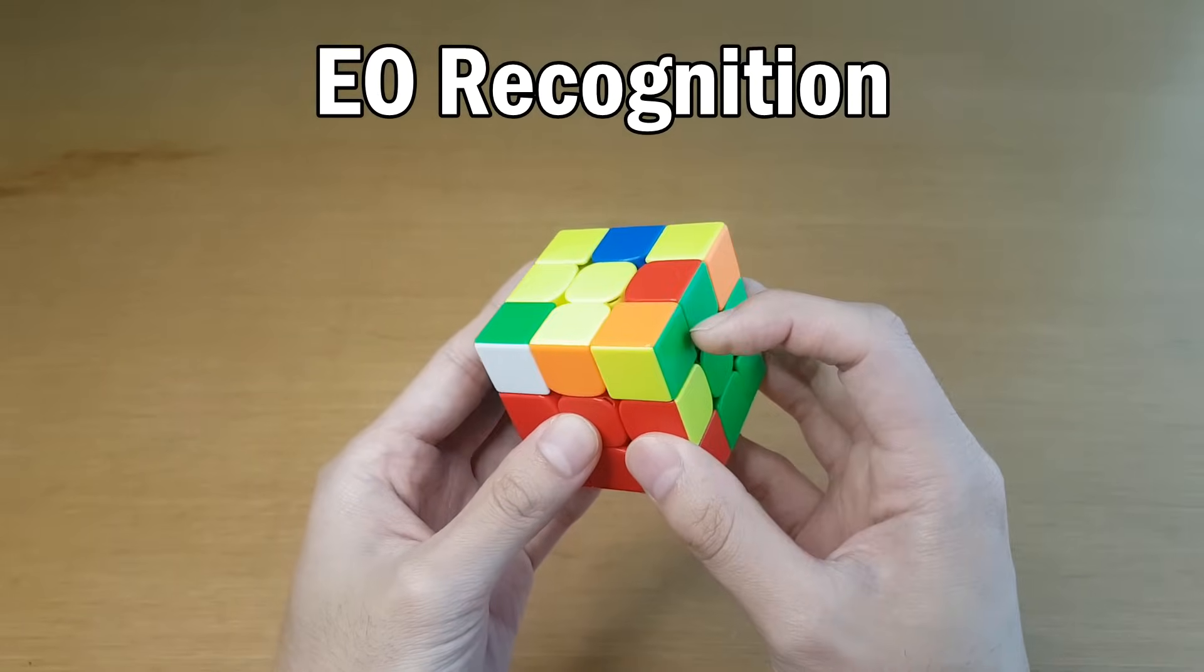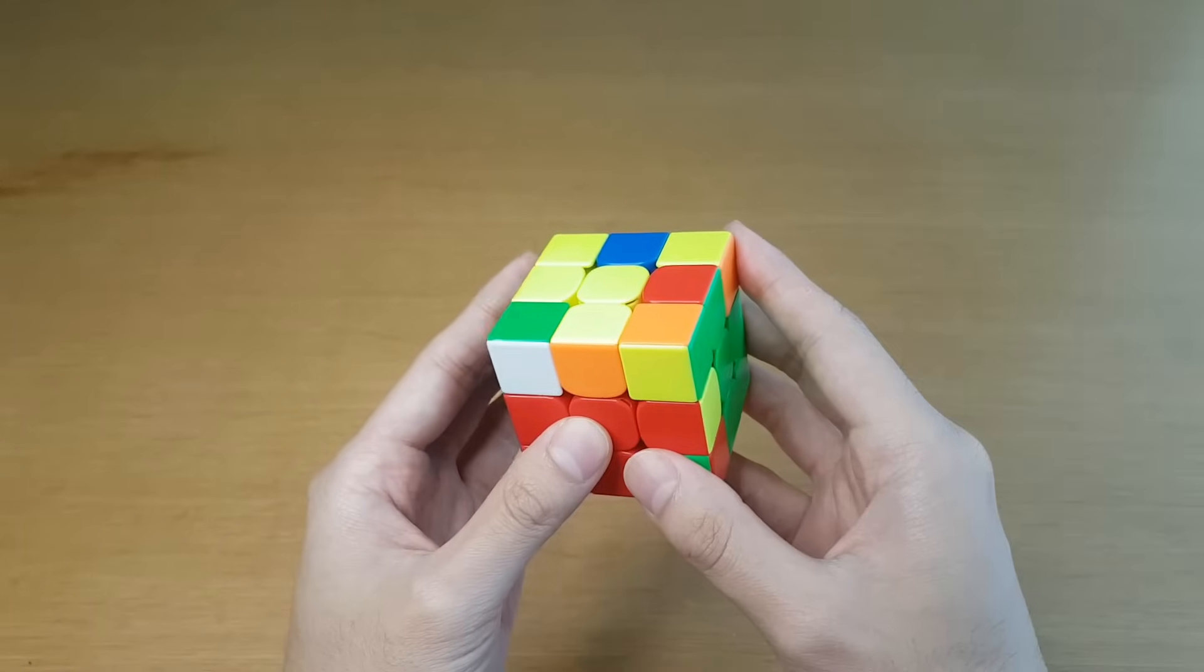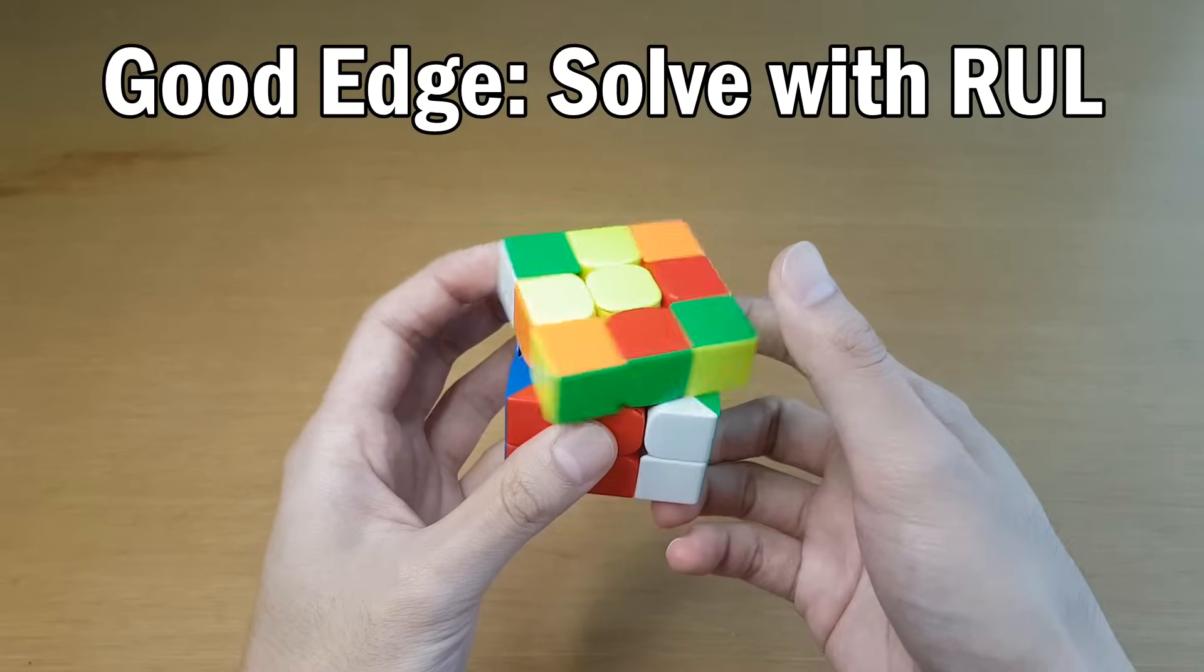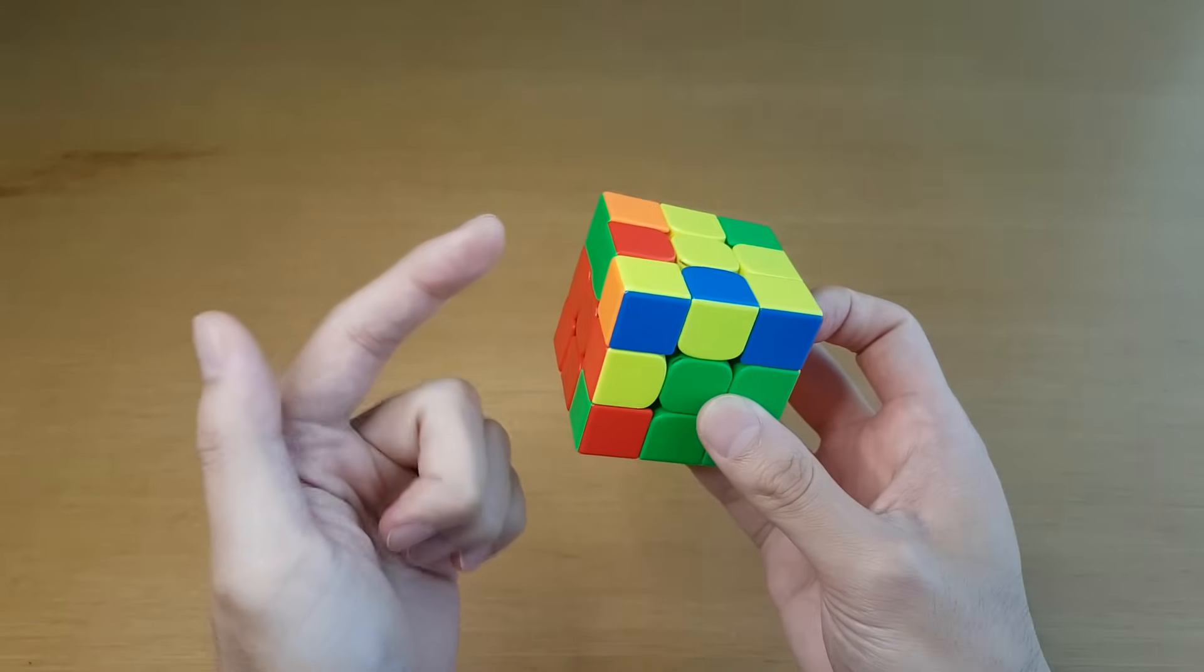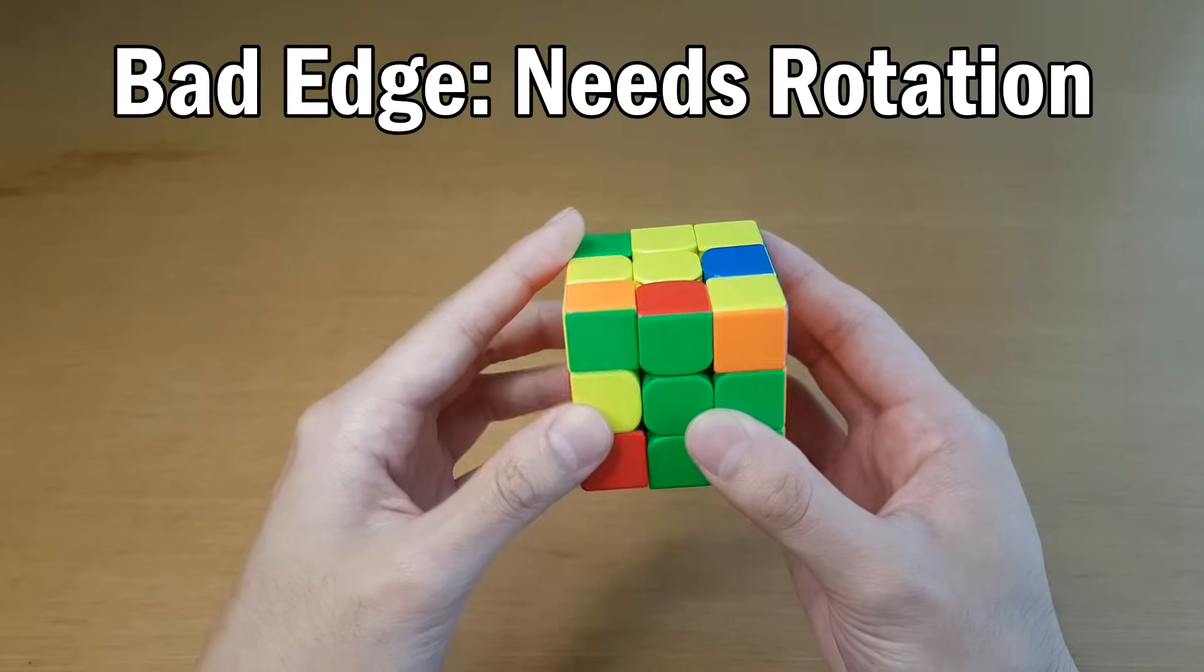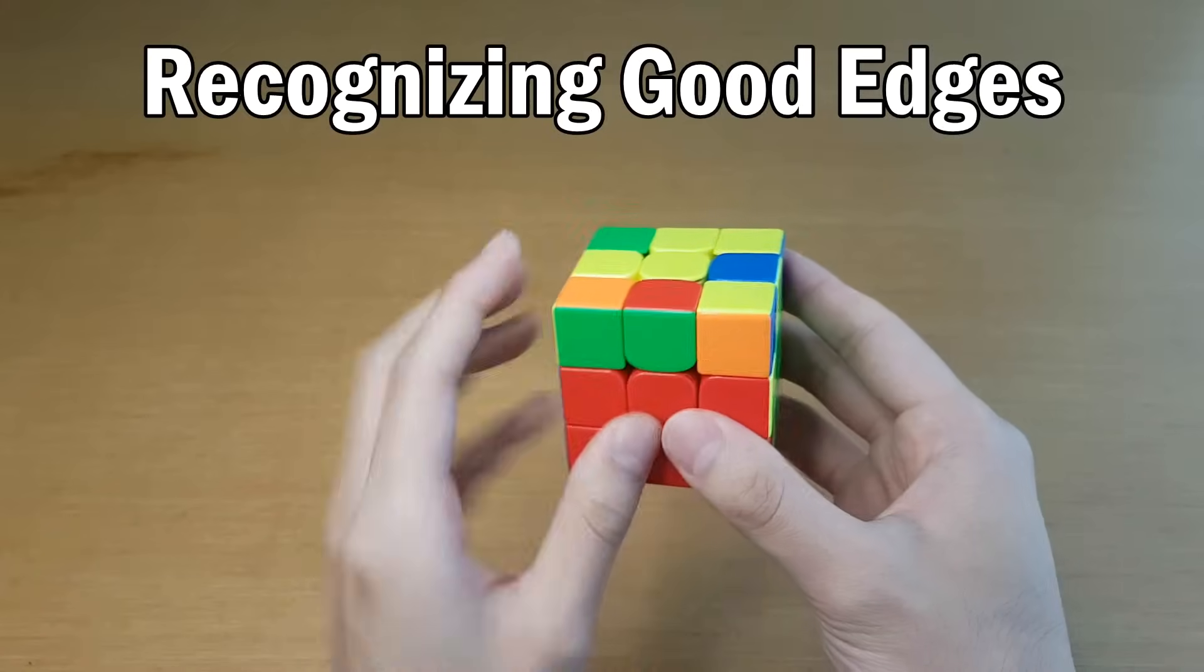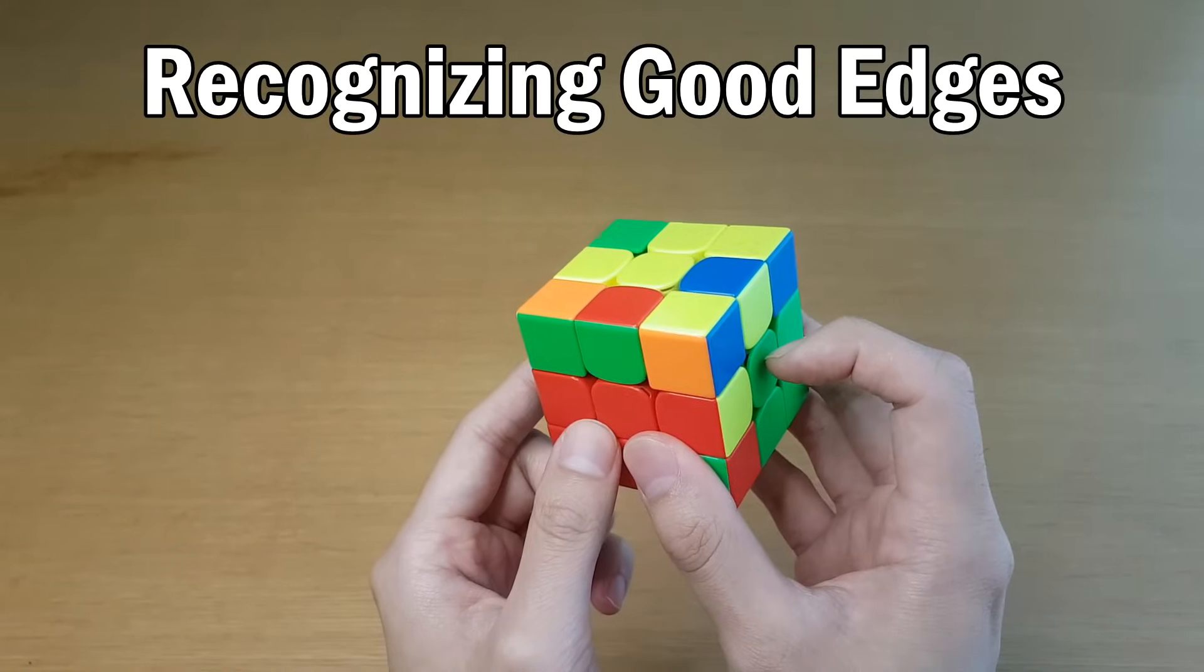So how EO works is you figure out the orientation of the edge. Is it a good edge or a bad edge? And what that means is a good edge can be solved into where it belongs using only RU and L moves. But if I do a cube rotation, this is now a bad edge. And if I try to solve it into its spot using RU L moves, it is flipped. How I know if an edge is good is I see if the side color matches one of the side centers, then it's good.